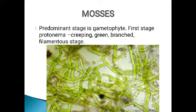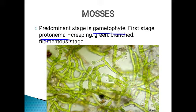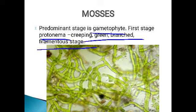Now we will see about mosses. In mosses, the main plant body is the gametophyte, because it bears and produces the gametes — same as in liverworts. This gametophyte consists of two stages. The first stage is called the protonema — the stage which develops directly from a spore. It is a creeping, green-colored, branched, filamentous stage.